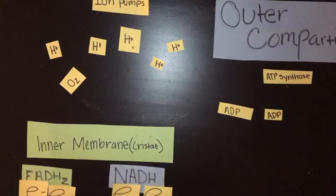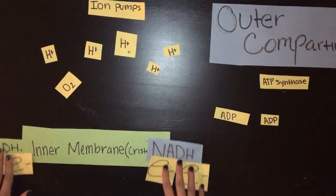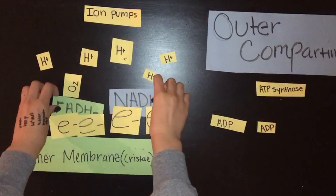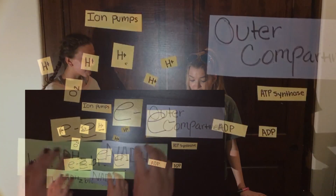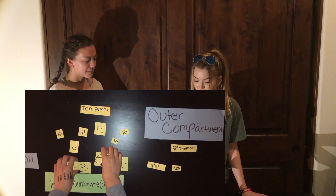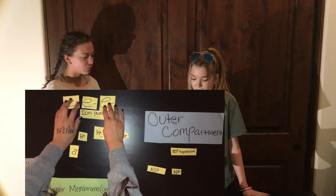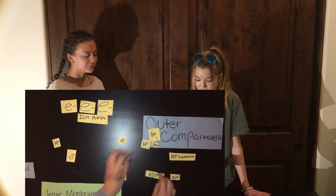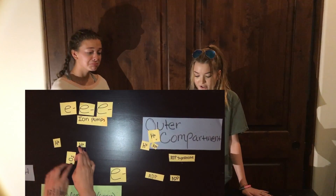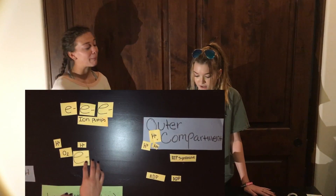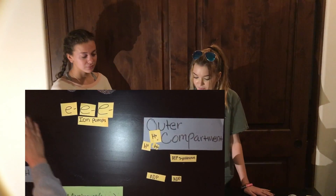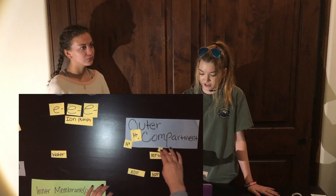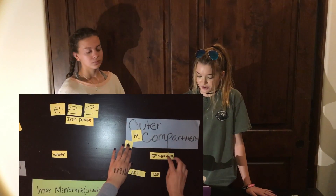Okay, so the high-energy electron carriers, NADH and FADH2, transfer the electrons to the inner membrane of the mitochondrion. Then electrons are passed through a series of carrier proteins, or the ion pump, creating energy to pump H-positive to the outer compartment. Next, the low-energy electrons are accepted by O2 and two H-positive ions, forming H2O. After that, a similar sequence occurs with FADH2.